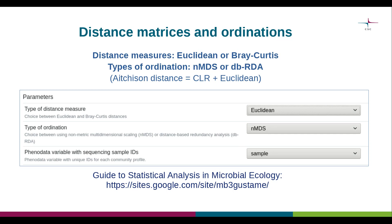The Distance Matrices and Ordinations tool in Chipster is also used to produce multivariate ordinations. Two types of ordinations are available: non-metric multi-dimensional scaling, or NMDS, and distance-based redundancy analysis, or DBRDA. The choice of which ordination type to use is study specific. To find out more about different ordination methods and other topics related to the analysis of microbial community data, I can wholeheartedly recommend a website called Guide to Statistical Analysis in Microbiology, for which I have provided a link on this slide.